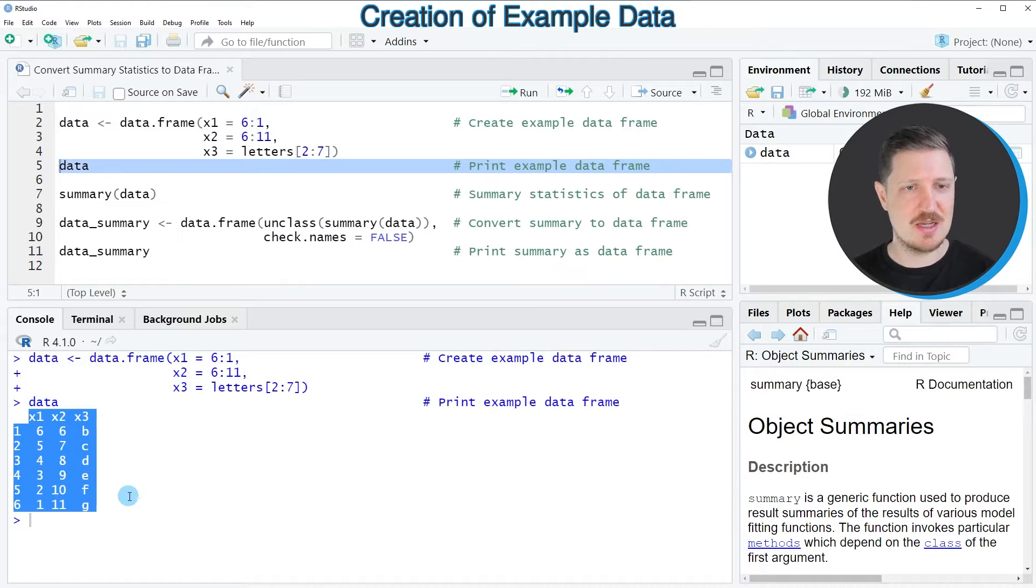And then you can see that our example data frame contains 6 rows and 3 columns: x1, x2, and x3.